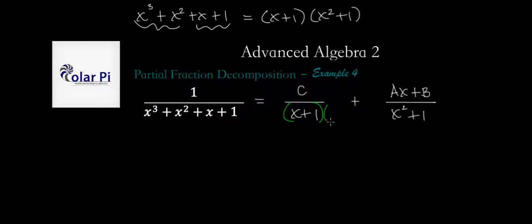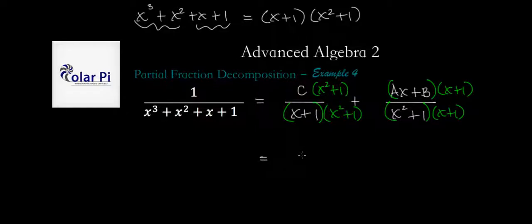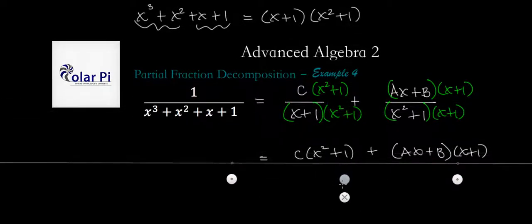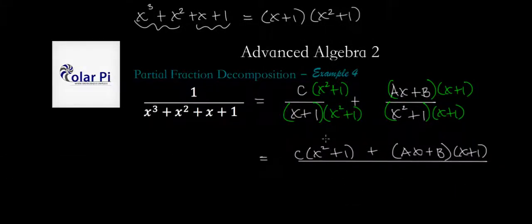So to achieve that goal, we have to multiply by x squared plus one here, which means that we have to multiply by x squared plus one here. That way, we multiply by one. And then over here, we multiply by x plus one, and then by x plus one here. And so then now what we have is equal to c times x squared plus one, and then plus ax plus b times x plus one. This is going to be the numerator and the common denominator, which is the product of these two guys, which is x cubed plus x squared plus x and then plus one.